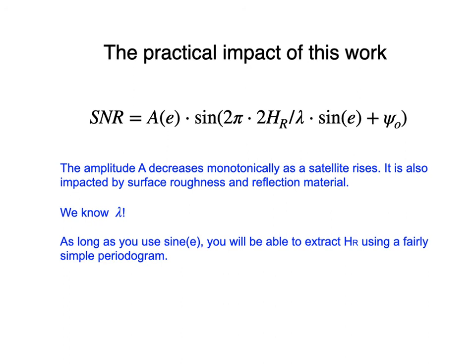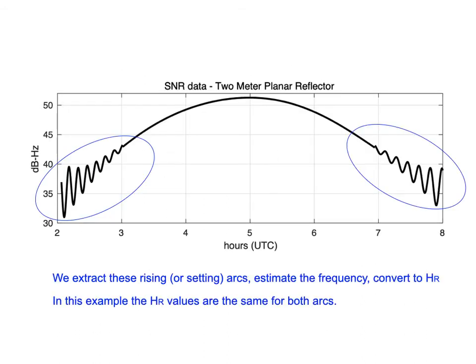The practical impact of knowing what a planar reflector produces and Axelrad's change of variables is a very simple expression to model the SNR oscillations plus the direct signal. The amplitude term A(E) is not a constant, so we have to account for that. Lambda is 19 centimeters for GPS L1 and 24.4 centimeters for GPS L2. Using sine of elevation angle, you can extract reflector height H_R using a periodogram. The data of interest are shown here as a function of time, but the periodogram uses sine of elevation angle.